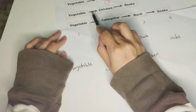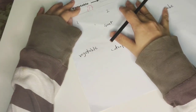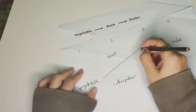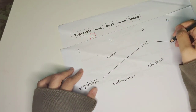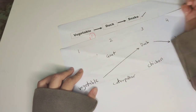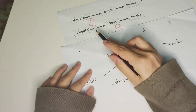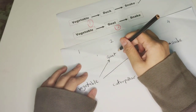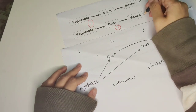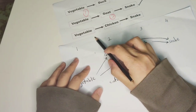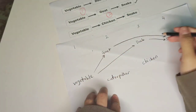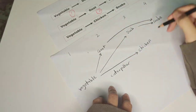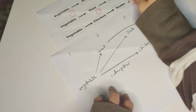After that, the last step — we need to draw arrows. We look at the first food chain: vegetable eaten by duck, so we draw a long arrow. Then duck is eaten by snake — that is the first food chain. The second food chain: vegetable eaten by goose, and then goose eaten by snake, so a long arrow is drawn. Then the third food chain: vegetable eaten by chicken. Make sure you draw the arrow according to the food chain. Chicken eaten by snake. Done with the third one.